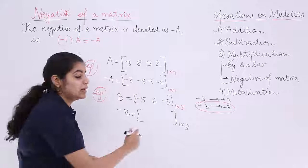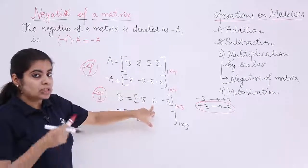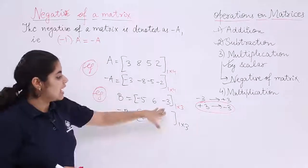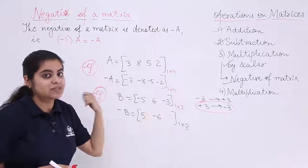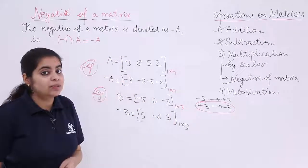Minus 5 into minus 1 is plus 5. 6 is a positive, so positive into minus 1 makes it negative. And last but not the least, I have minus 3 inside the matrix. Minus 3 becomes plus 3.